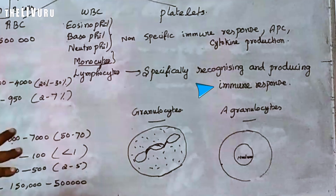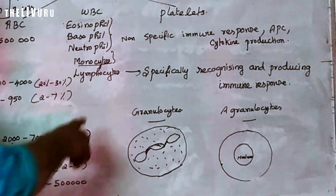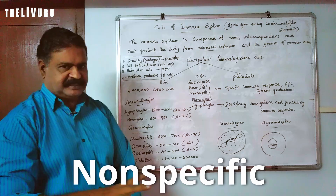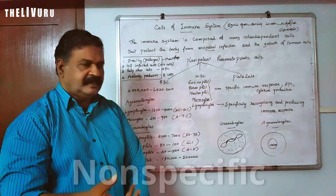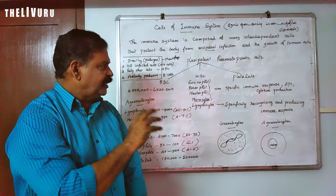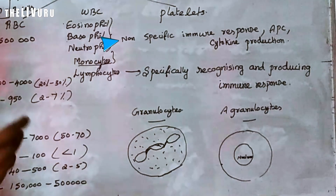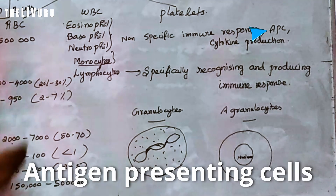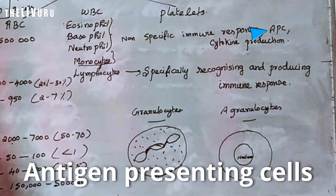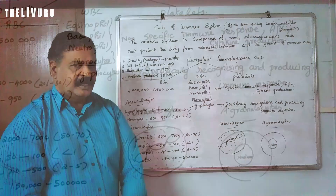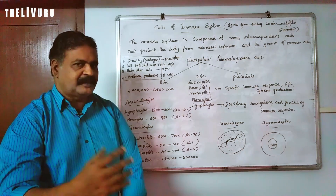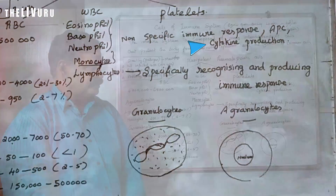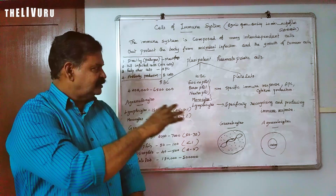Lymphocytes act against the pathogen. The immune response of lymphocytes against pathogens can be non-specific. The non-specific immune response involves, for example, APC presenting the antigen, leading to cytokine production. This is a general immune response.